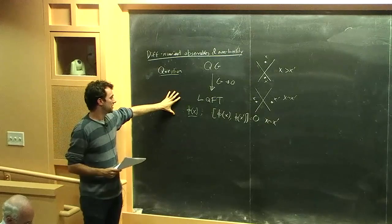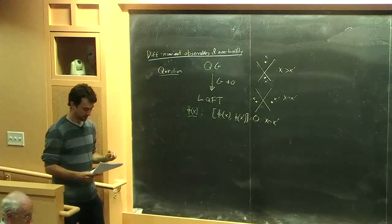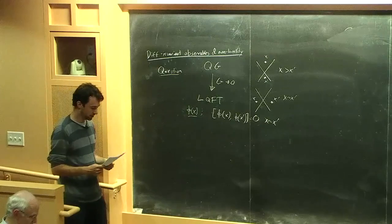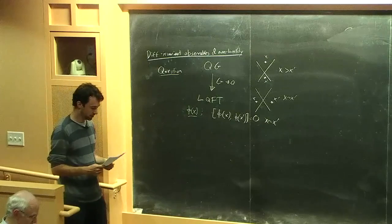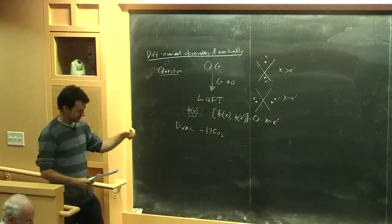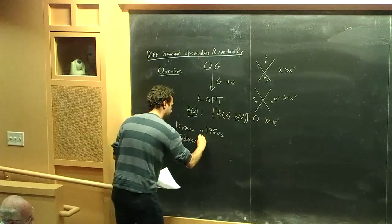The problem is that we can't define these local things. We have to replace our local fields with gravitationally dressed operators if we imagine working perturbatively. The question is how badly is micro-causality violated — how non-local are they? This is a very old story, going back to Dirac in the 1950s for QED, where he pointed out that his famous spinor operator is not a gauge-invariant operator. You have to dress it in some way.